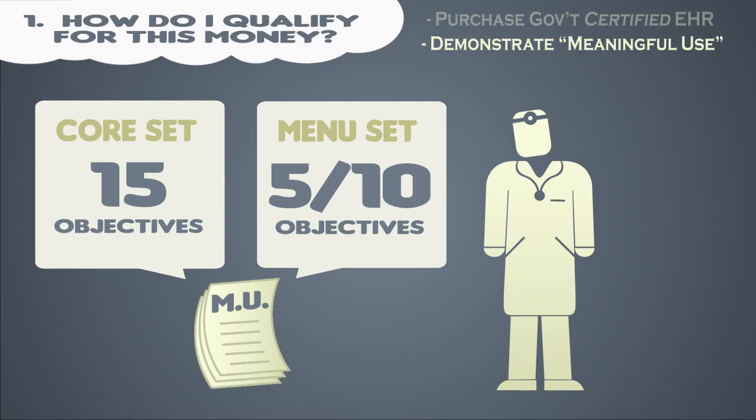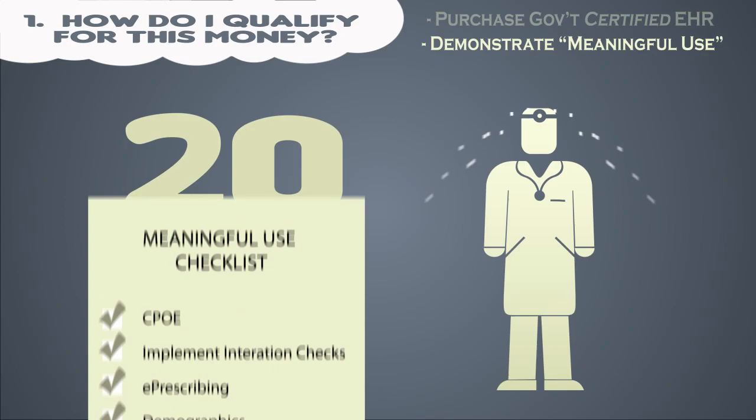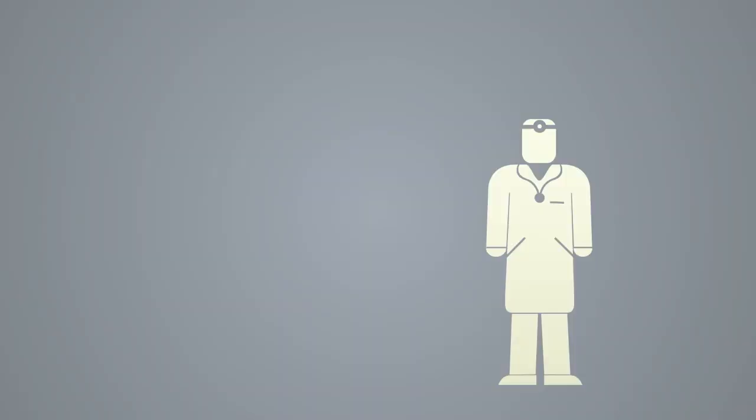In all, this means physicians must meet 20 total objectives in order to demonstrate meaningful use. Fail to meet even one of these meaningful use requirements and you become ineligible for the incentives.